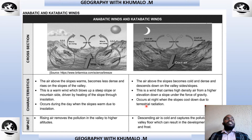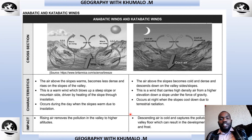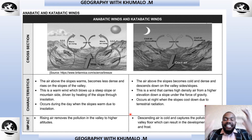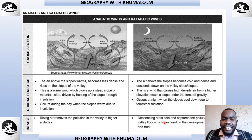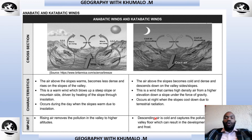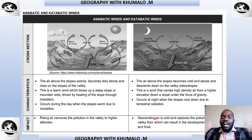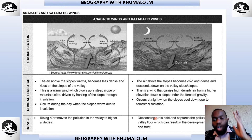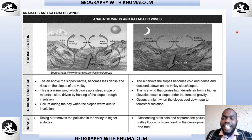One of the impacts of catabatic winds is that the descending cold air captures pollution on the valley slope, which can result in the development of smoke, frost, or fog. The catabatic winds can give us frost, fog, or smoke.